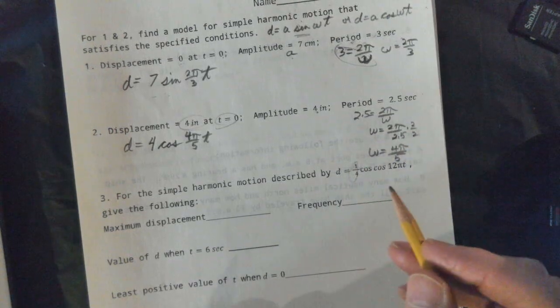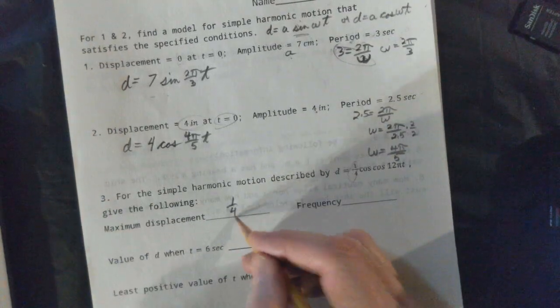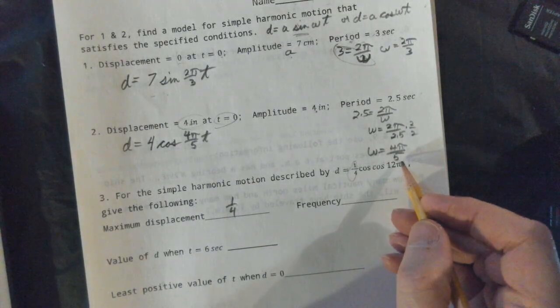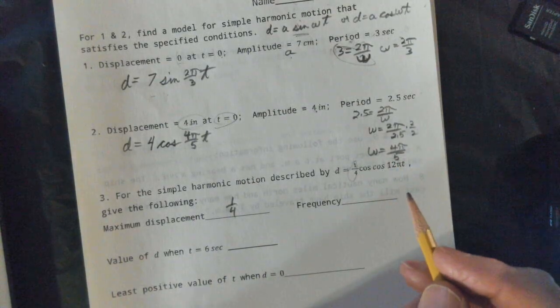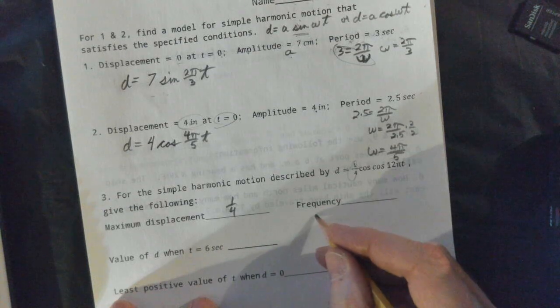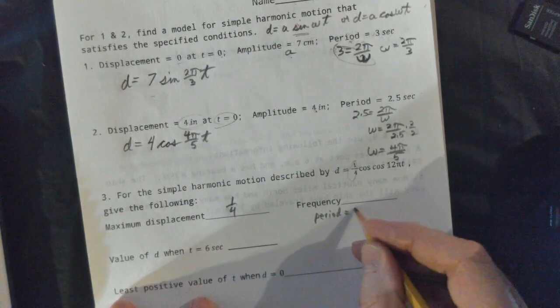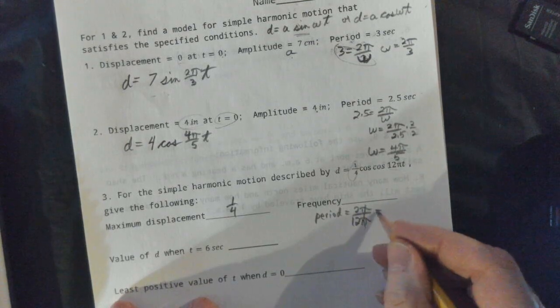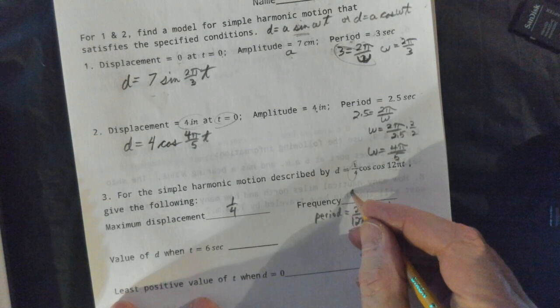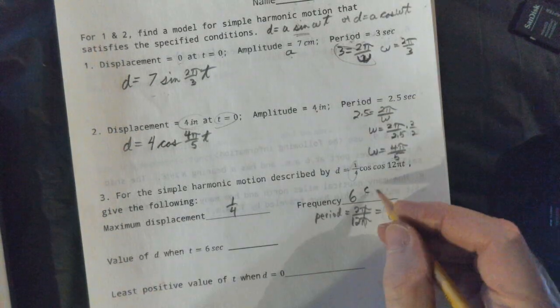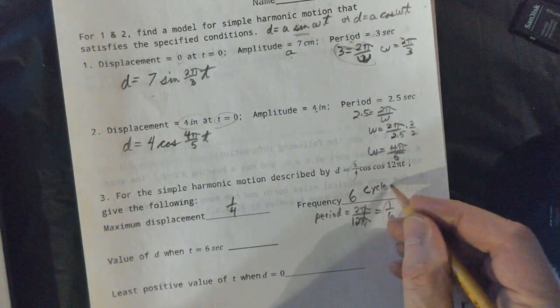Maximum displacement — that is the amplitude. The frequency is the reciprocal of the period. The period is 2π over omega, which is 12π. This period is 1/6. And the frequency: in 1/6 of a second it goes through a cycle, so it goes through 6 cycles per second.